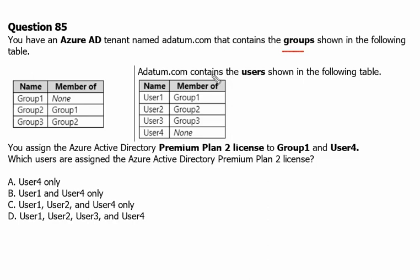adatum.com contains the users shown in the following table. User 1 is a member of group 1, user 2 is a member of group 2, user 3 is a member of group 3, and user 4 is not a member of any group. You assign the Azure Active Directory Premium Plan 2 licenses to group 1 and user 4.